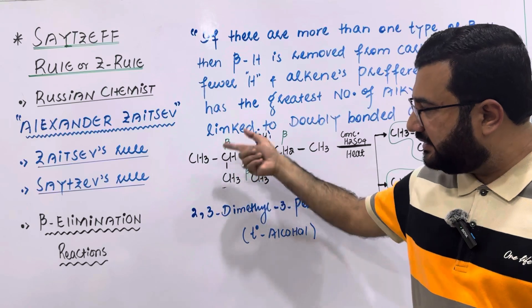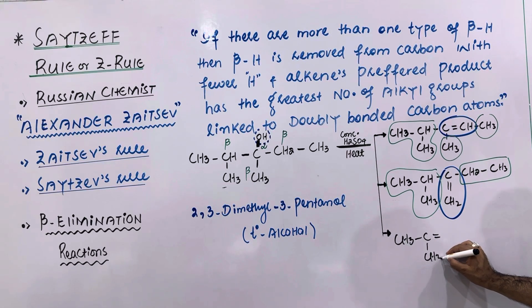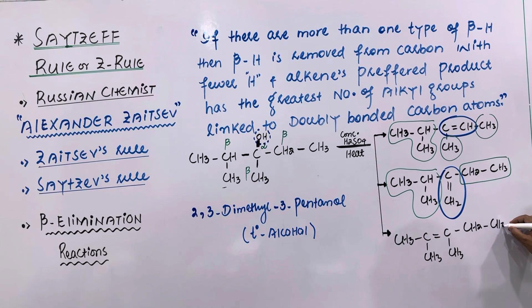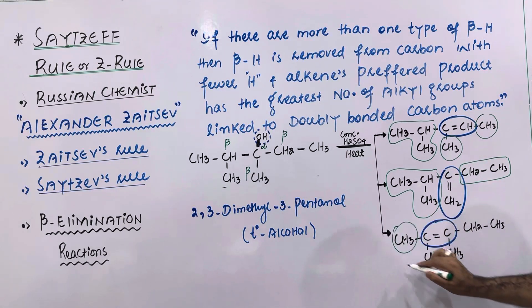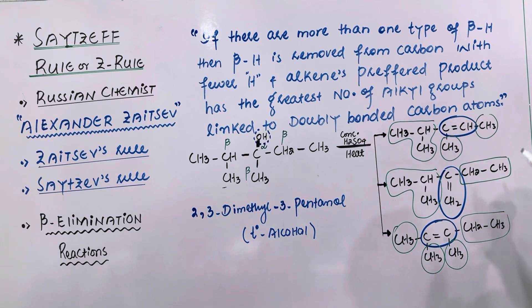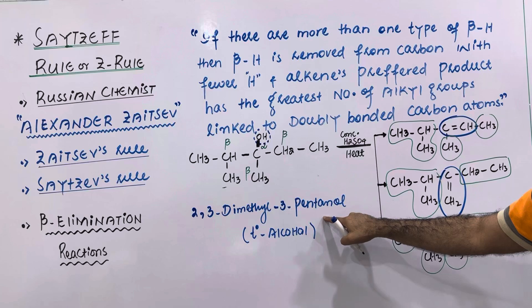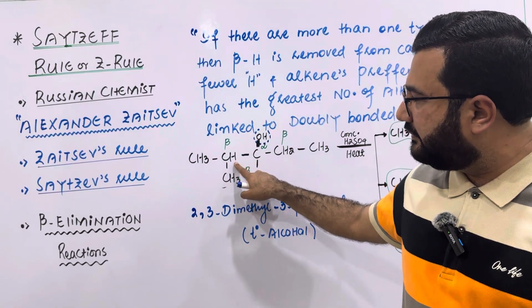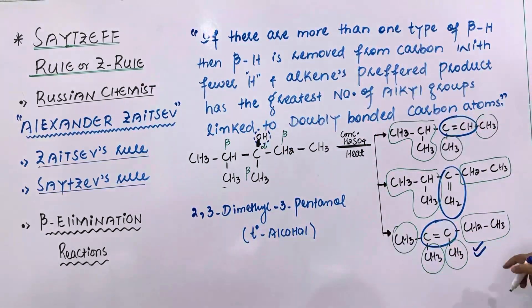The last option is the third beta carbon. If it loses the beta hydrogen, the product formed has two doubly bonded carbon atoms with the maximum number of alkyl groups attached: methyl, another methyl, methyl, and ethyl — that is 4 alkyl groups. This means in this case there are the maximum number of alkyl groups attached to the doubly bonded carbon atoms. So the Zaitsev rule says that the major product of the dehydration of this alcohol will be this alkene, where the beta hydrogen is taken from the carbon which already has the minimum number of hydrogen atoms.